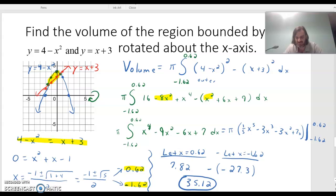So an approximation, be very careful putting those numbers in. Remember I've got that pi out front to multiply by. But when I put in the 0.62, I got approximately 7.82. And when I plugged in the negative 1.62, I got approximately negative 27.3. So that minus that negative means I'm going to add them. So the total volume that I get is 35.12.